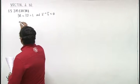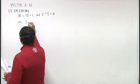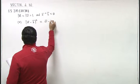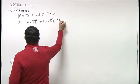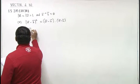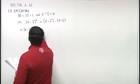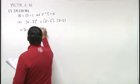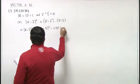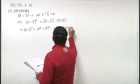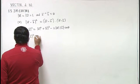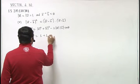For the first part, we consider the magnitude of a minus b squared. Using the dot product property, magnitude of a minus b squared equals a minus b dot a minus b. Expanding this gives magnitude of a squared plus magnitude of b squared minus twice a dot b, where a dot b equals magnitude of a times magnitude of b times cos theta. So magnitude of a minus b whole square is one plus one minus two cos theta.